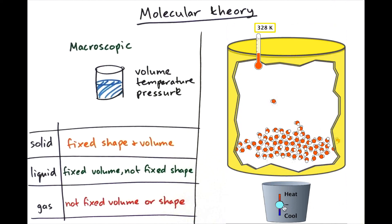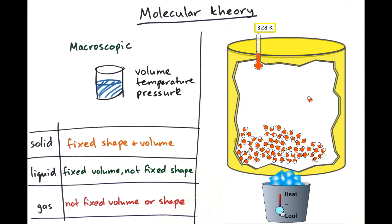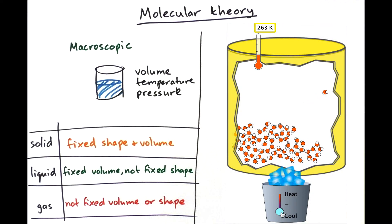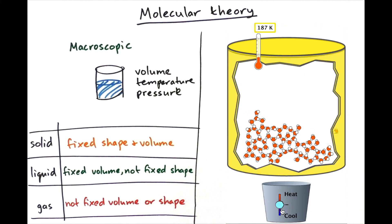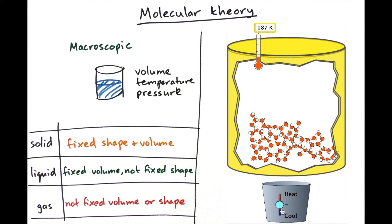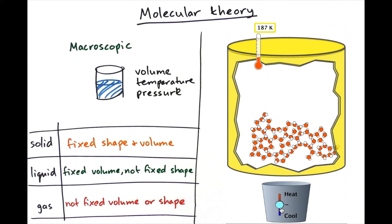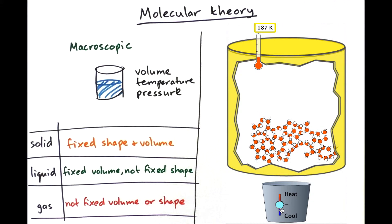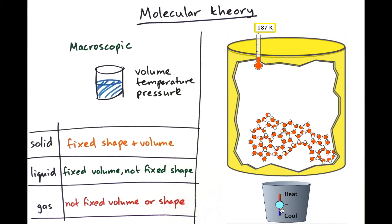So let's see if we can explain what we see in a solid that the shape is fixed and the volume is fixed. So we're going to need to cool down the water and make ice. And now that we have ice we can see that the distance between the molecules stays the same. Which means that the volume stays the same. But also the molecules are now not free to move past each other. They can only vibrate, they can't move past each other. Which means that the shape is also fixed.